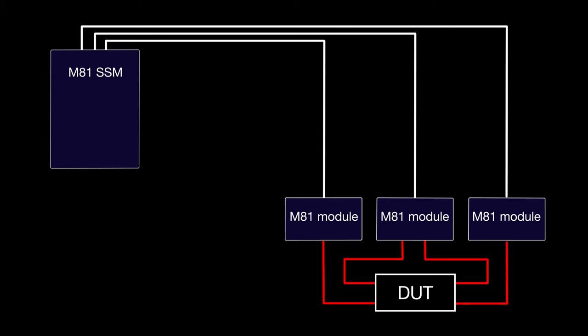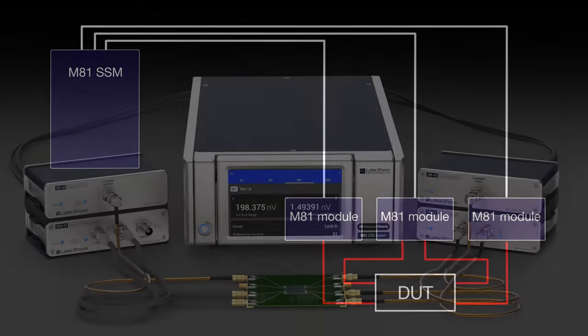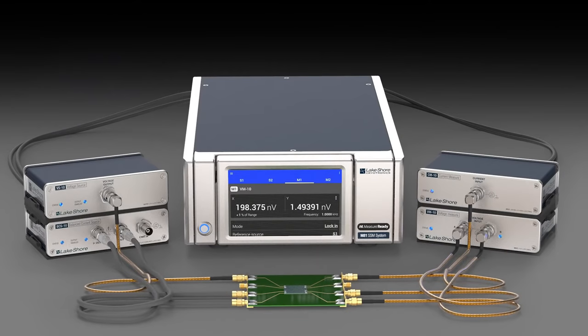This reduces signal cabling length and associated leakage, noise and settling times, particularly critical at the ultra-low signal levels inherent in a cryogenic temperature characterization application.